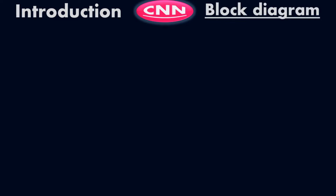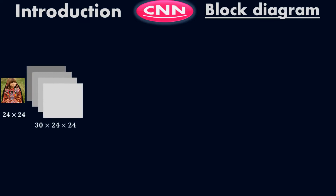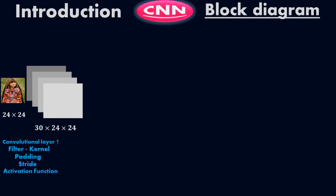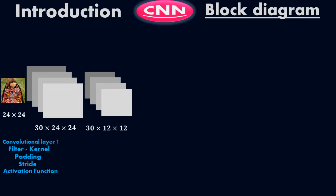Let me show you the block diagram of a CNN. For example, I have an image here which is 24 by 24. Here is my first convolutional layer, which has 30 filters with a size of 24 by 24. In this convolutional layer 1, we use a filter kernel with padding, stride, and activation function.